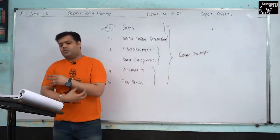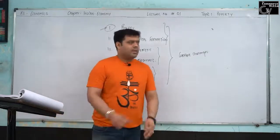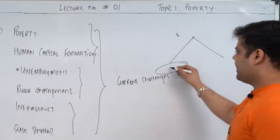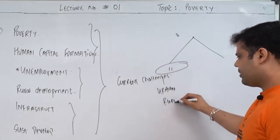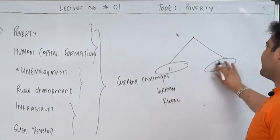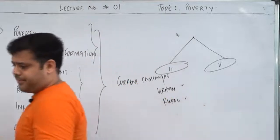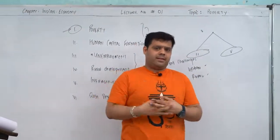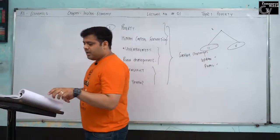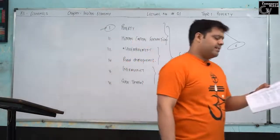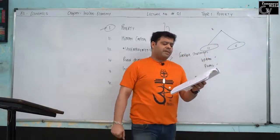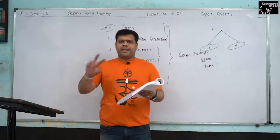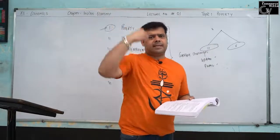Let's move to the categories of poor. In India, poor is divided into two categories: urban and rural poor. Who are urban poor? Those people who live in urban areas — cities and towns — and are poor. These poor people reside in cities and towns and generally comprise people who have migrated from rural areas in search of employment opportunities.